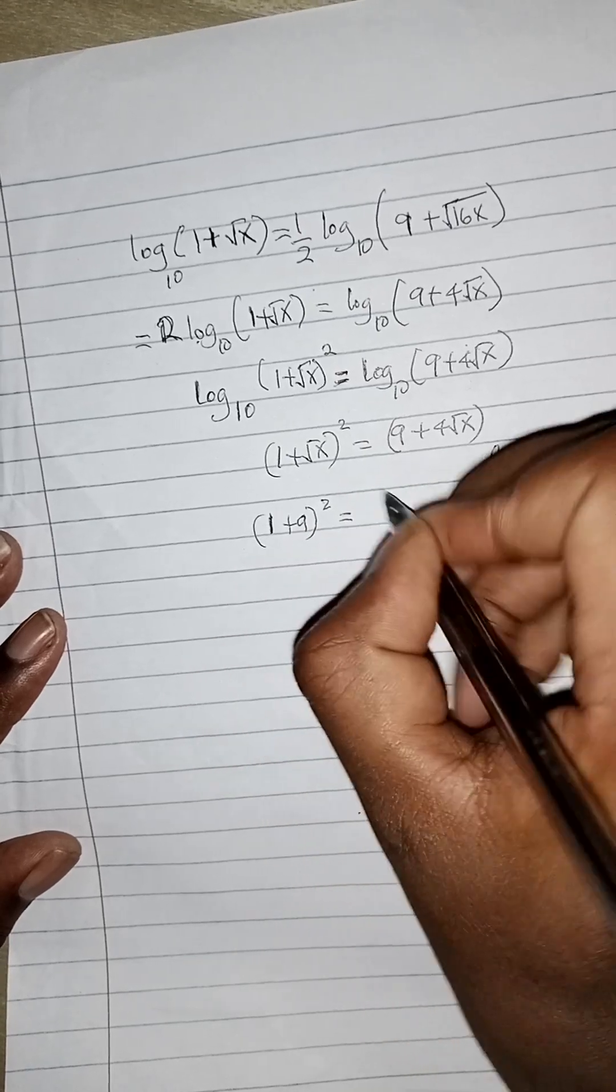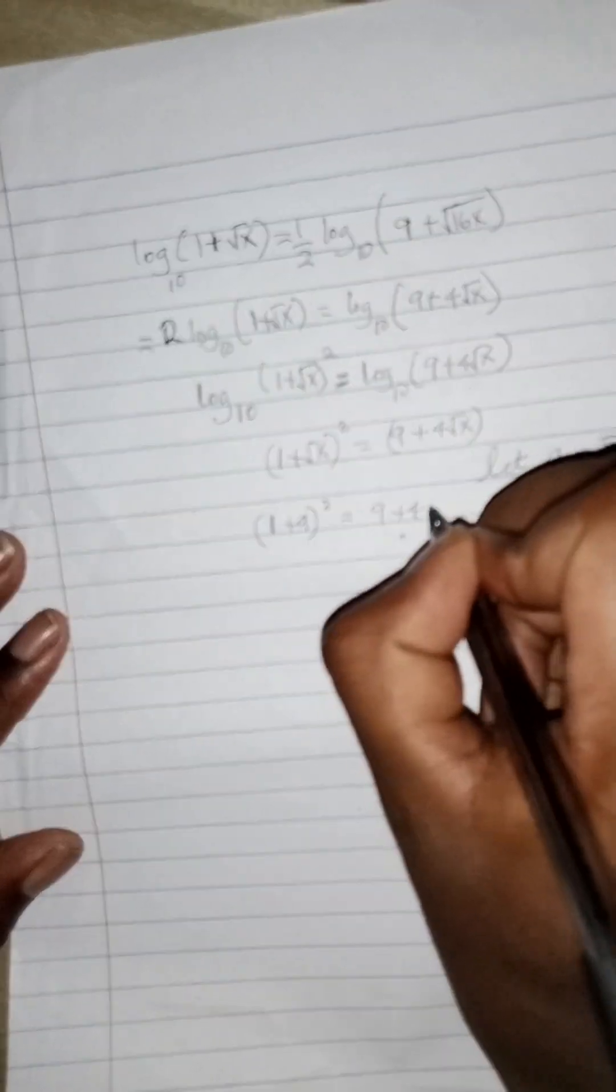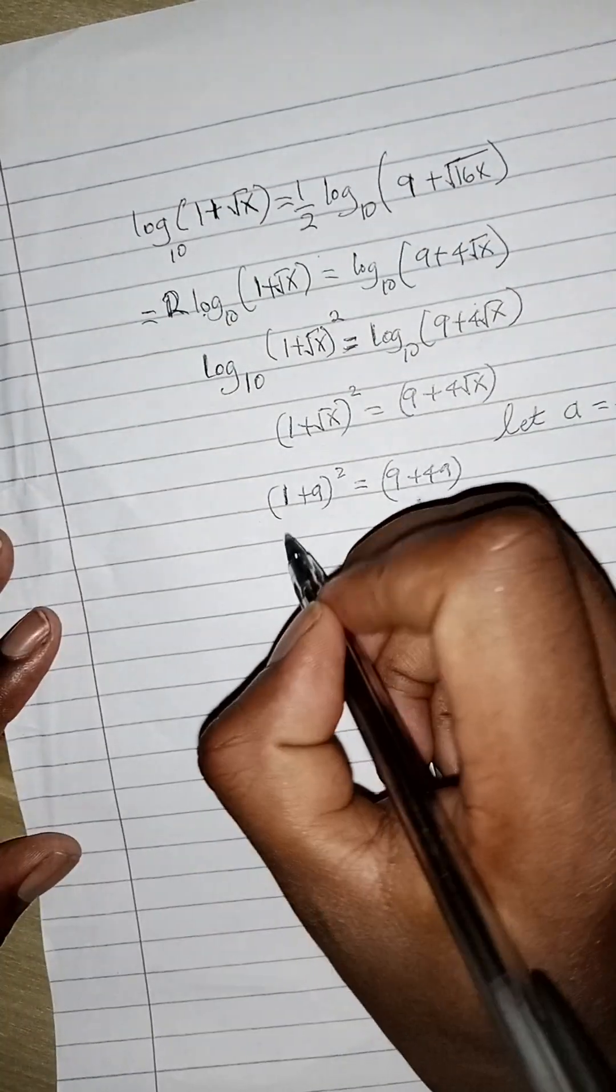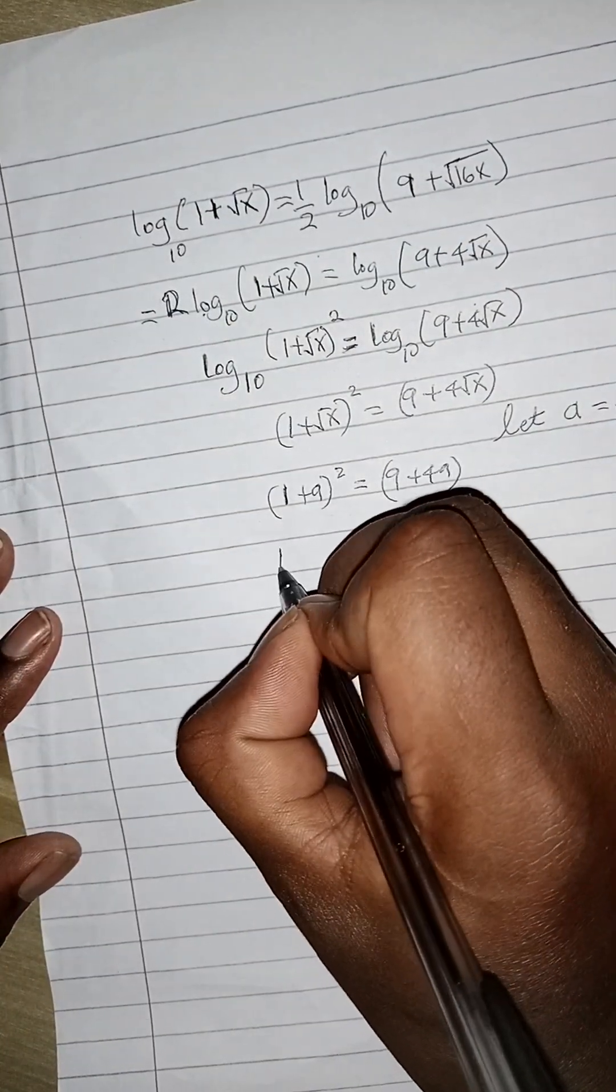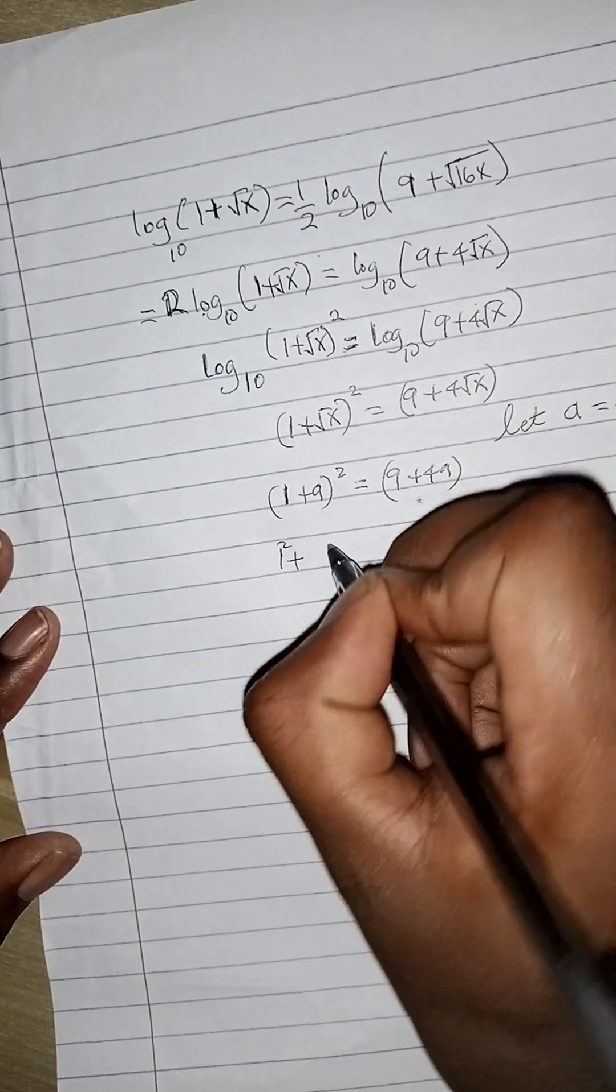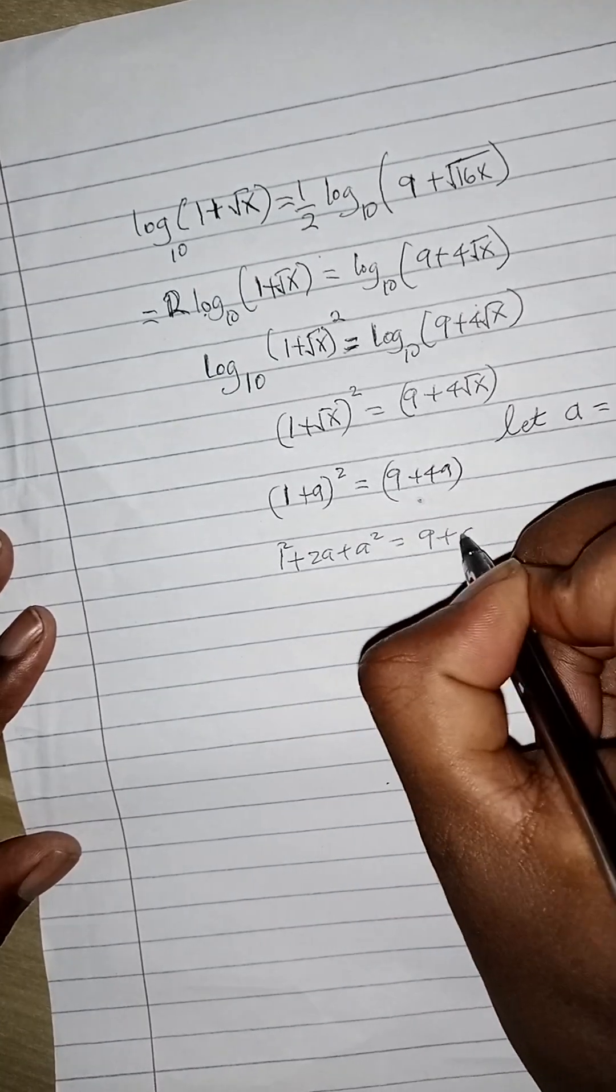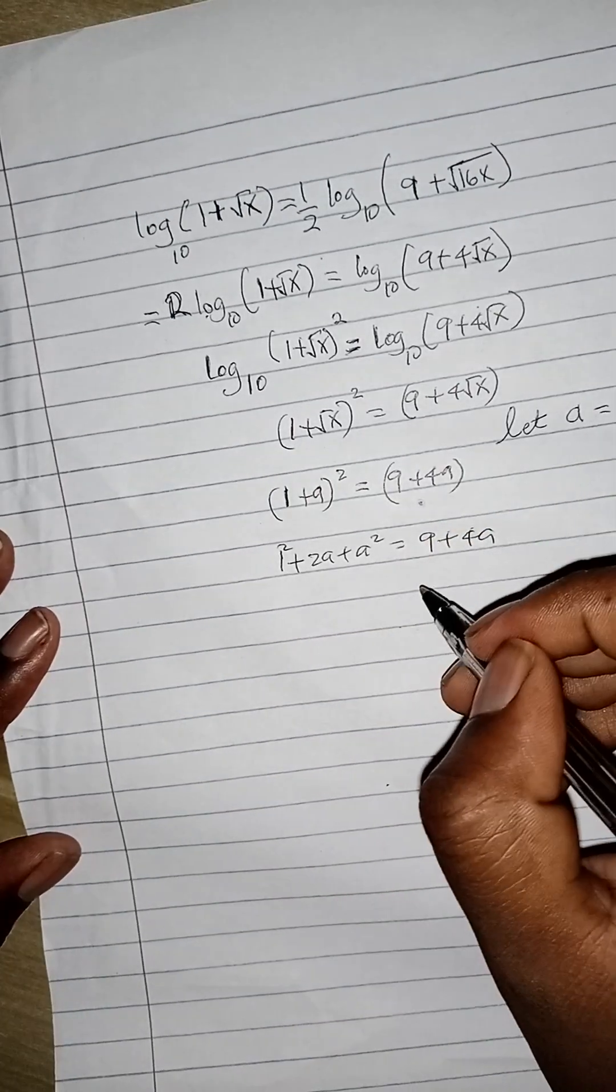And get (1 plus a) squared is equals to 9 plus 4a. Now it is easier to work with this that way. So if you now open the brackets here, you get 1 plus 1 squared plus 2a plus a squared is equal to 9 plus 4a. Now if you reorganize this a little bit...